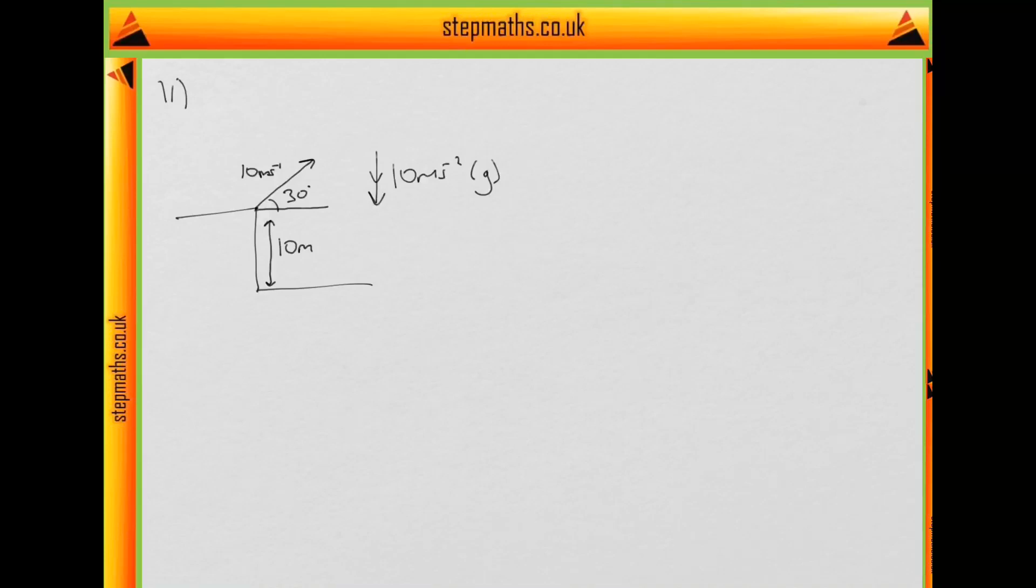Question 11 concerns projectile motion. The question says an object is projected off of a cliff at 10 meters per second at 30 degrees to the horizontal. The cliff is 10 meters above the level of the beach and it wants us to find the time it takes for the object to reach the beach.